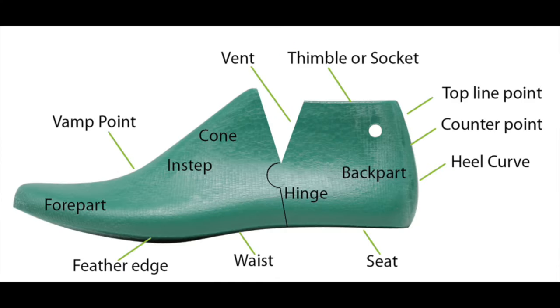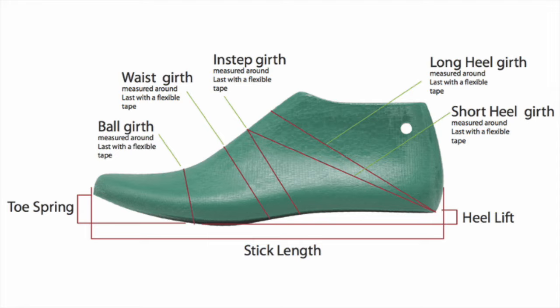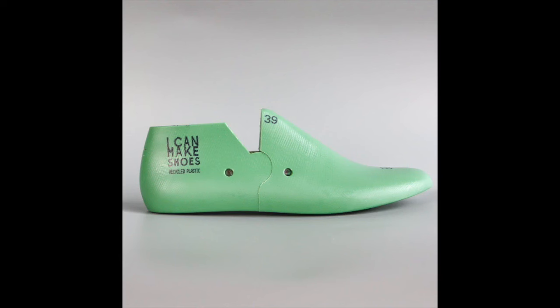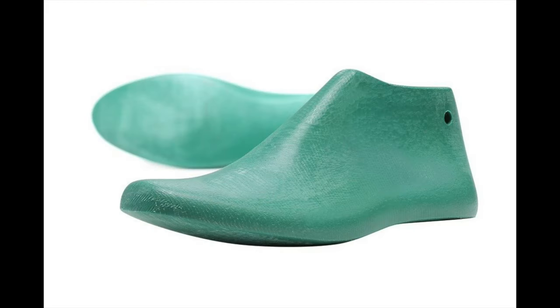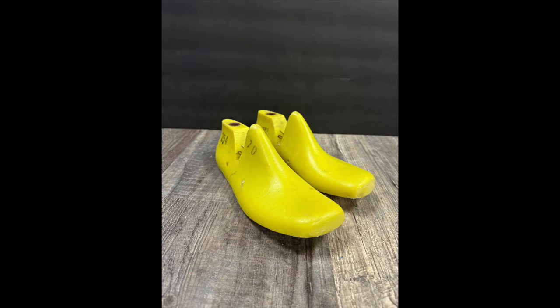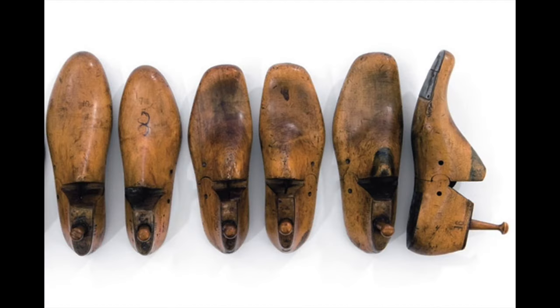Any serious sneaker designer needs to be thoroughly familiar with one component of the production process, and that's the last. A last is defined by Wikipedia as a mechanical form shaped like a human foot, used by shoemakers in the manufacturing and repair of shoes. Lasts typically come in pairs and have been made from various materials, including hardwoods, cast iron, and high-density plastics.